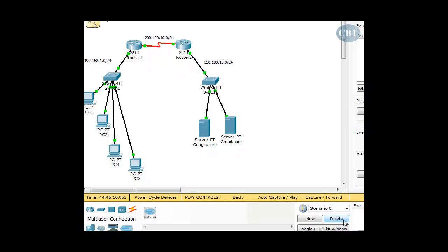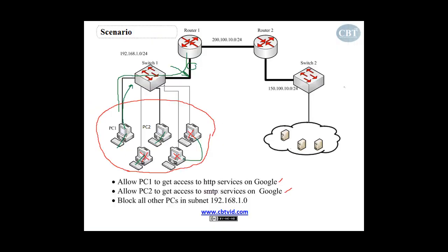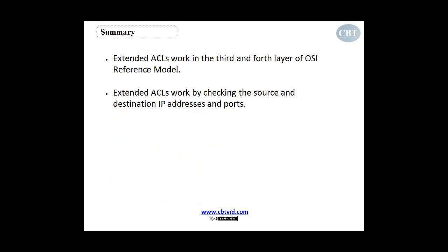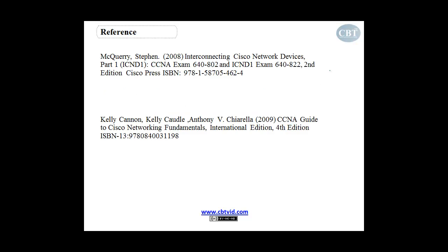That's how you configure an extended access control list. With this configuration we have achieved our goals. As you saw, in an extended ACL you have to configure it on the router closest to the source and apply it on the interface closest to the source. That's how you configure an extended access control list. I hope today's video was informative and helpful to you, and I would like to thank you for watching.